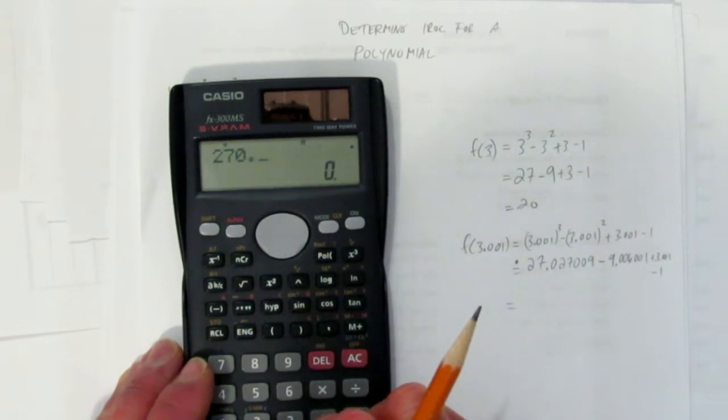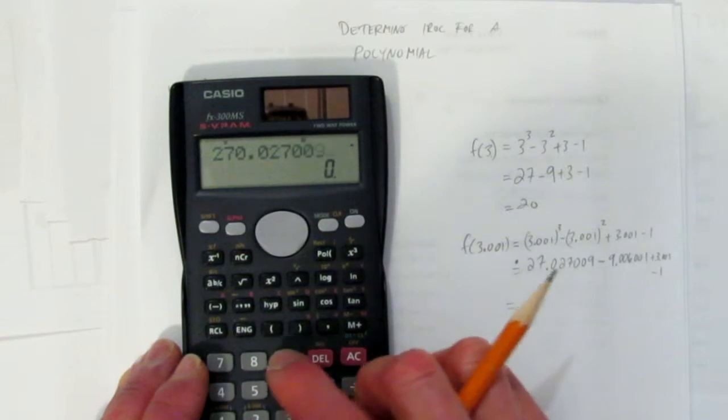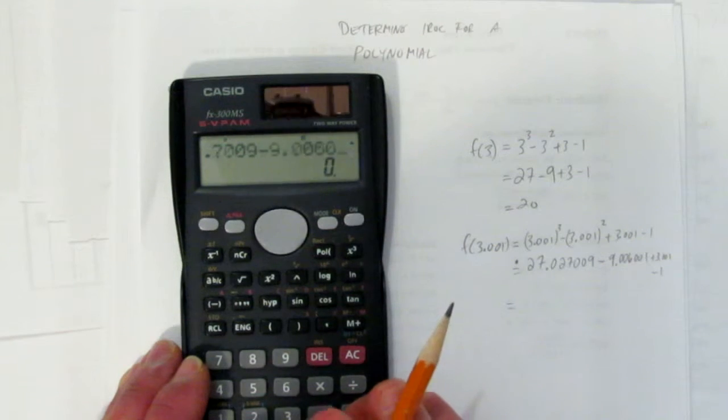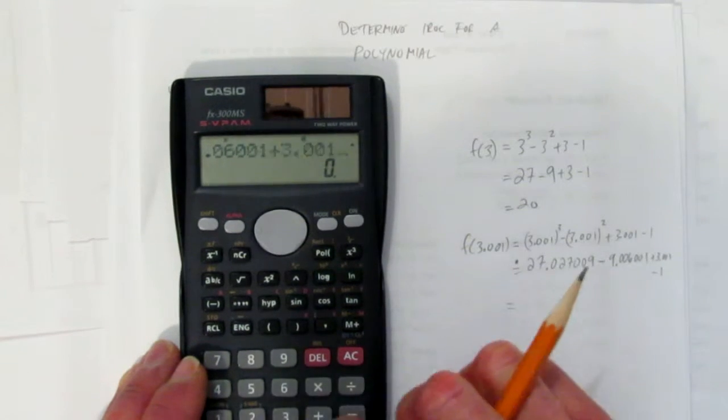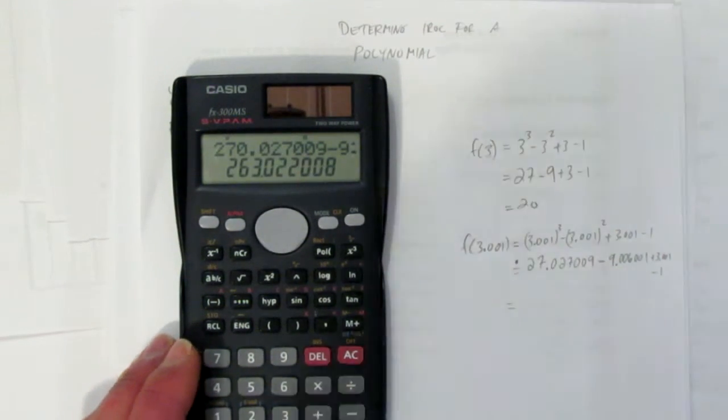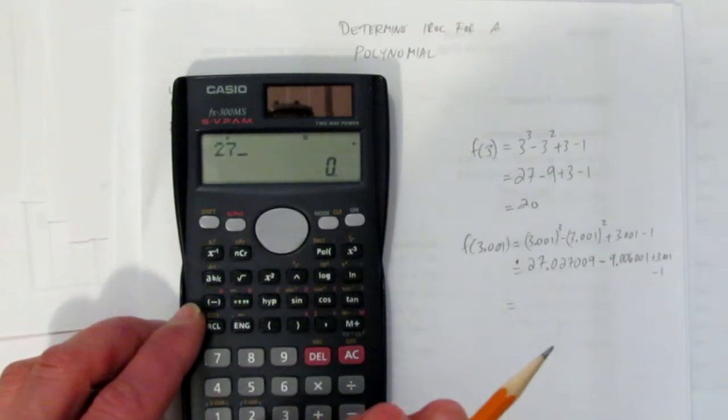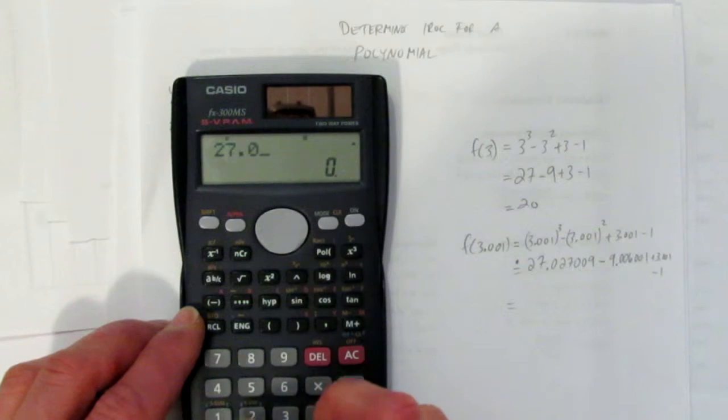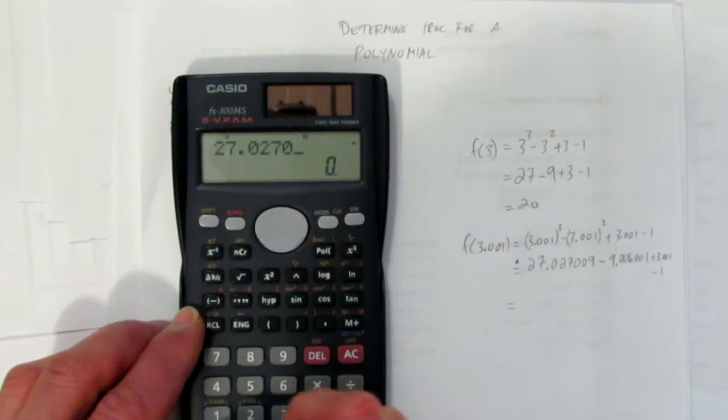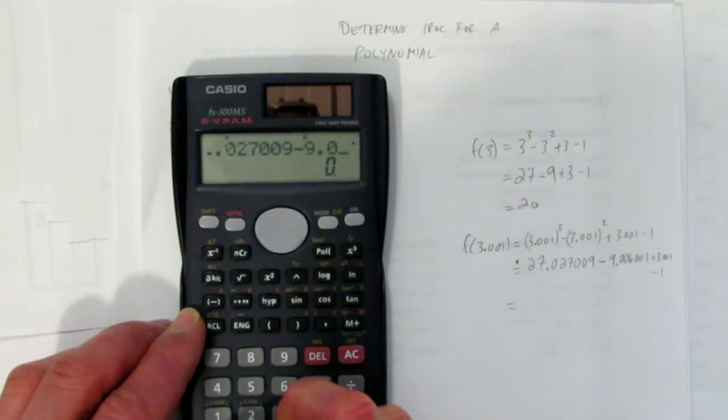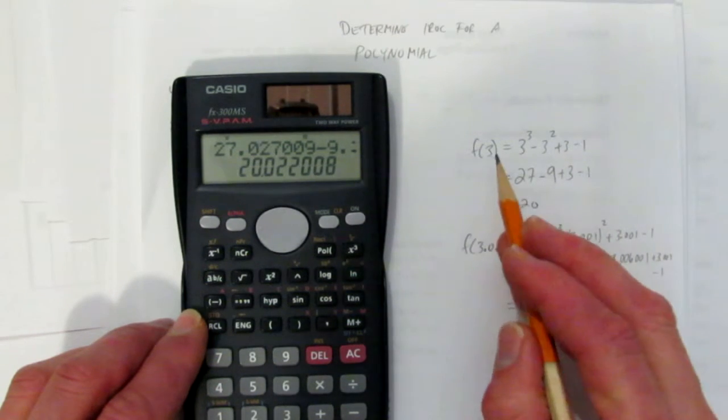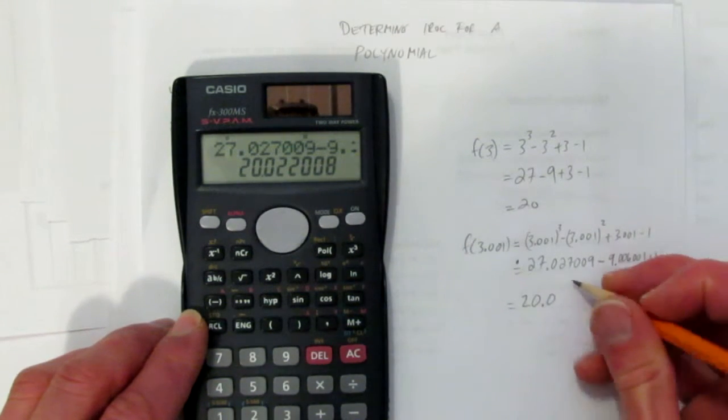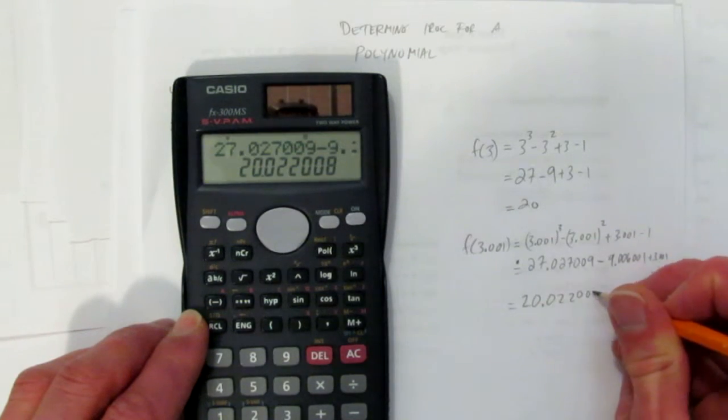Let's use the calculator. 27.027009 minus 9.006001 plus 3.001 take away 1. What do you get? 263. I must have typed something wrong. I'm going to do it again. I know I typed something wrong because I should be close to 20. I even saw what it was, but I'm going to do it again to make sure. I'm going to type slow now. Let's see what I got. Ah, much better. If I'm only 0.001 ahead of 3, my number should be very close to 20. And now it is: 20.022008.